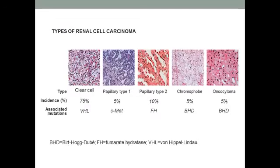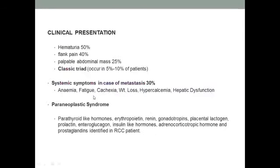Different types of RCC exist. The most common is clear cell carcinoma, followed by papillary and chromophobe types. Other tumors include collecting duct tumors and sarcomas. Clinically, there is the classic triad of hematuria, flank pain, and a palpable mass.